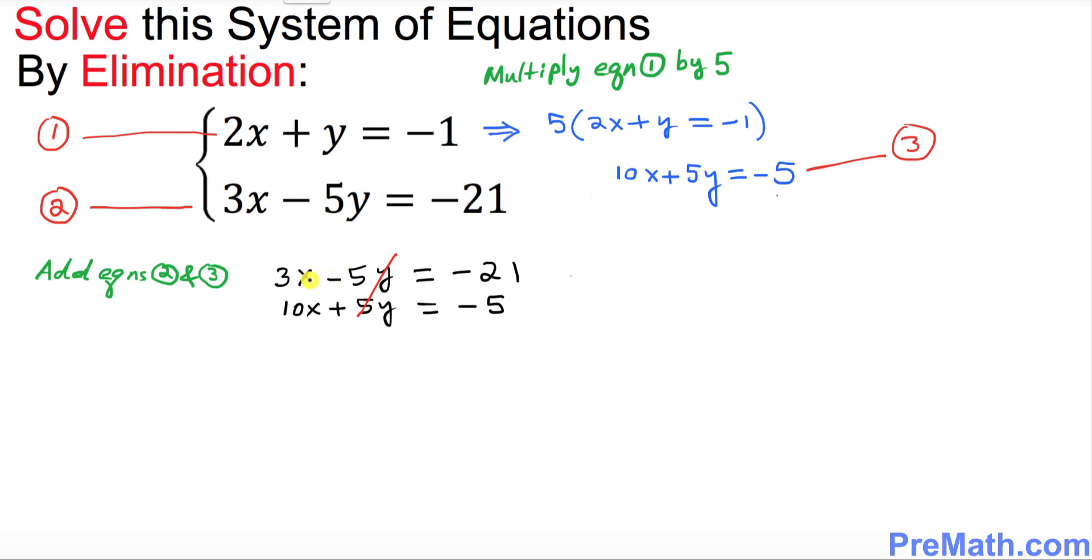So what we got is once we are done with this, we got simply 3x plus 10x makes 13x and these y's are gone, equals negative 26. I want you to divide both sides by 13 so x turns out to be negative 2.